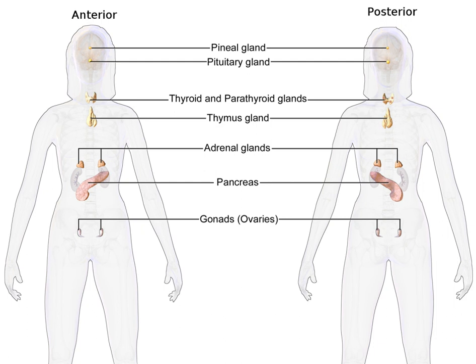In 1849, Arnold Berthold noted that castrated cockerels did not develop combs and wattles or exhibit overtly male behavior. He found that replacement of testes back into the abdominal cavity of the same bird or another castrated bird resulted in normal behavioral and morphological development, and he concluded erroneously that the testes secreted a substance that conditioned the blood that, in turn, acted on the body of the cockerel.